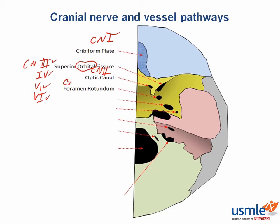Cranial nerve V2 passes through the foramen rotundum, which is round — rotund, round. And cranial nerve V3 passes through the foramen ovale, which is more oval shaped.